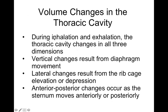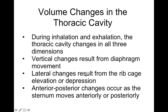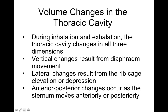During inhalation and exhalation, the thoracic cavity changes in three dimensions: vertical, lateral, and anterior-posterior changes. The vertical changes result from the respiratory diaphragm moving — when it contracts, it depresses, causing a vertical increase in thoracic volume. The lateral changes result from the rib cage expanding or contracting via the intercostal muscles. The anterior-posterior changes result from the sternum moving anteriorly and posteriorly by different muscles acting on it.